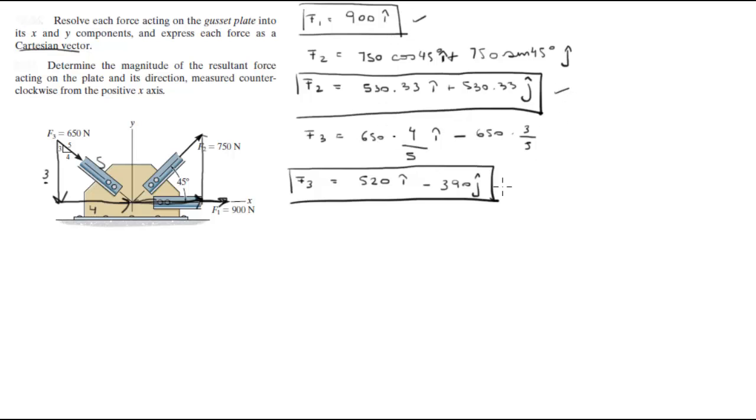So this is the solution for this problem. Now to get this problem we're going to add them up and we're going to get a Cartesian expression for the resultant force. So when you add all the I's together and all the J's together, you get 1950.33 I plus 140.33 J. This is the Cartesian expression for the resultant force.